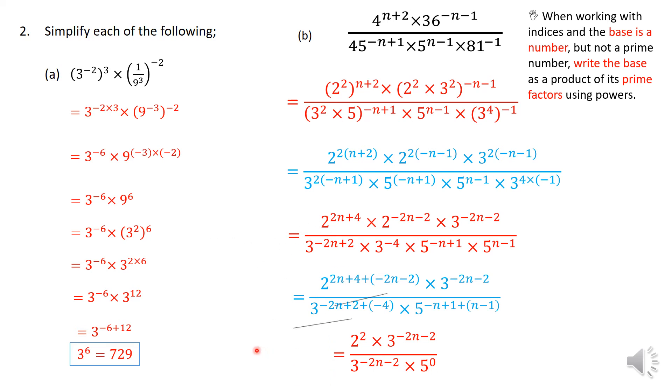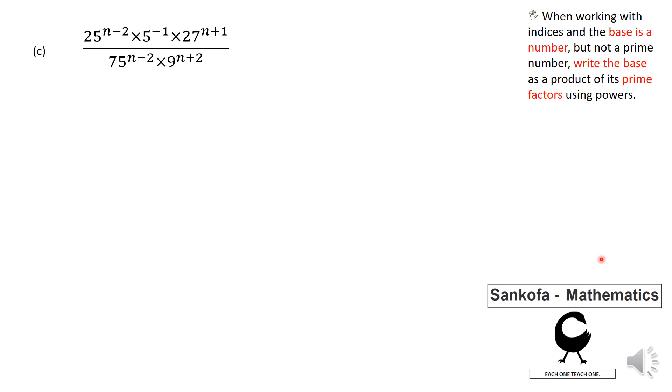So those can actually cancel, leaving you with 2 squared over 1, or 4 as a final answer. Remember 5 raised to the power of 0, and in relation to the 0 power except 0 is equal to 1.